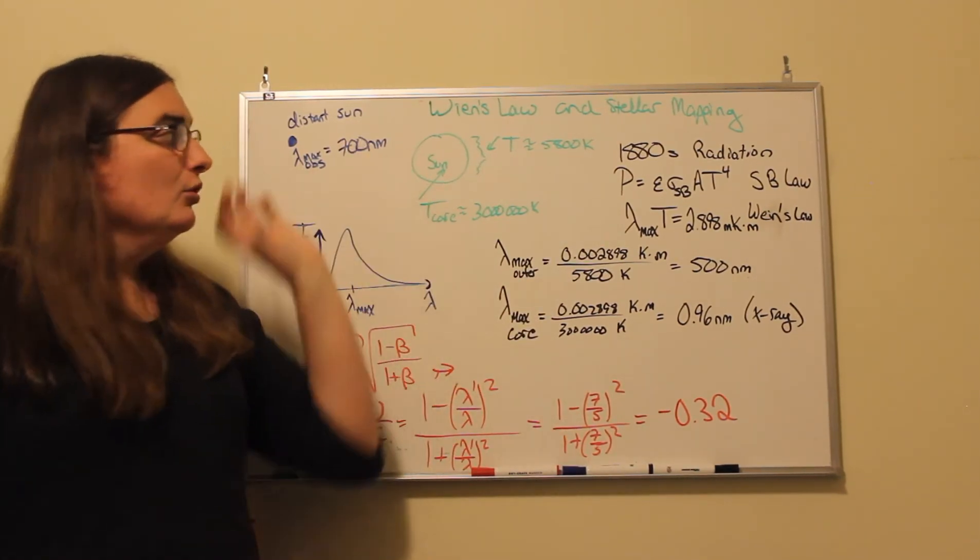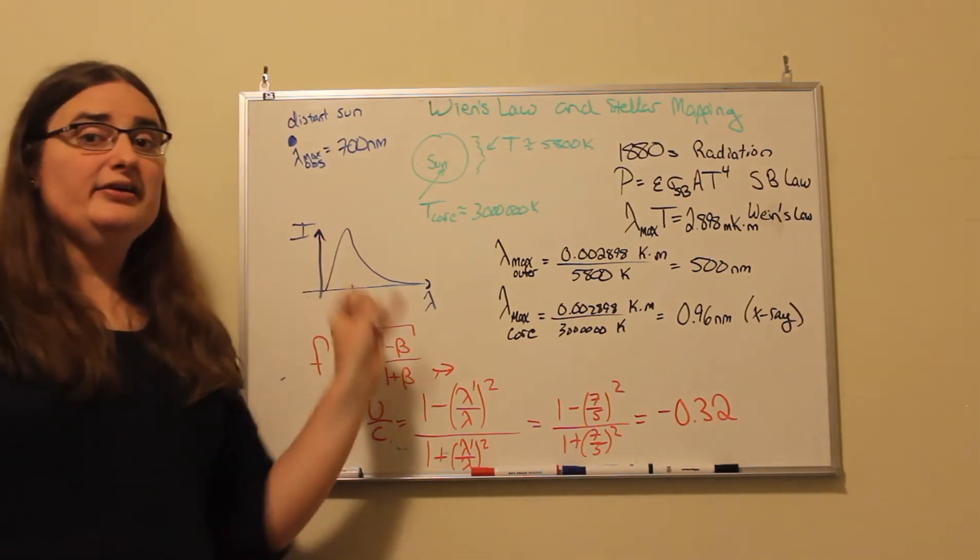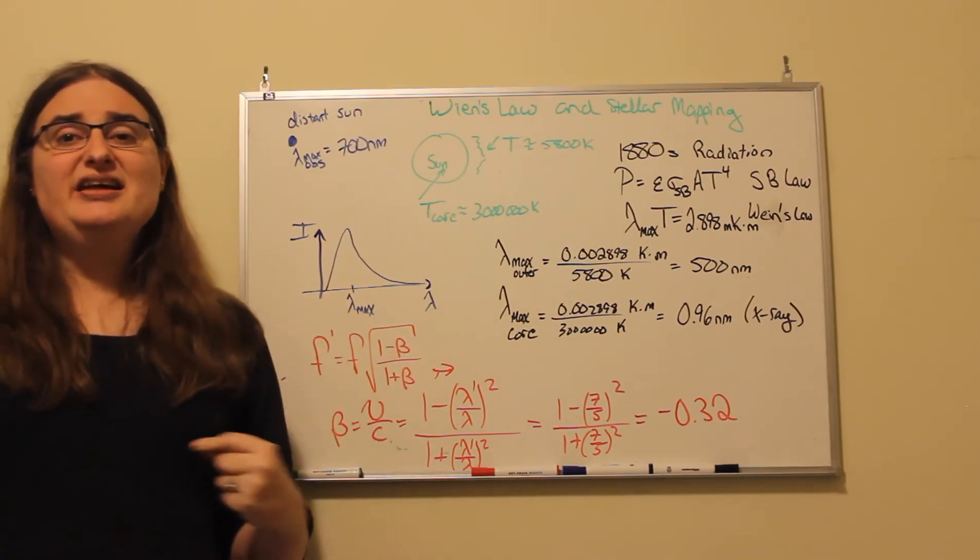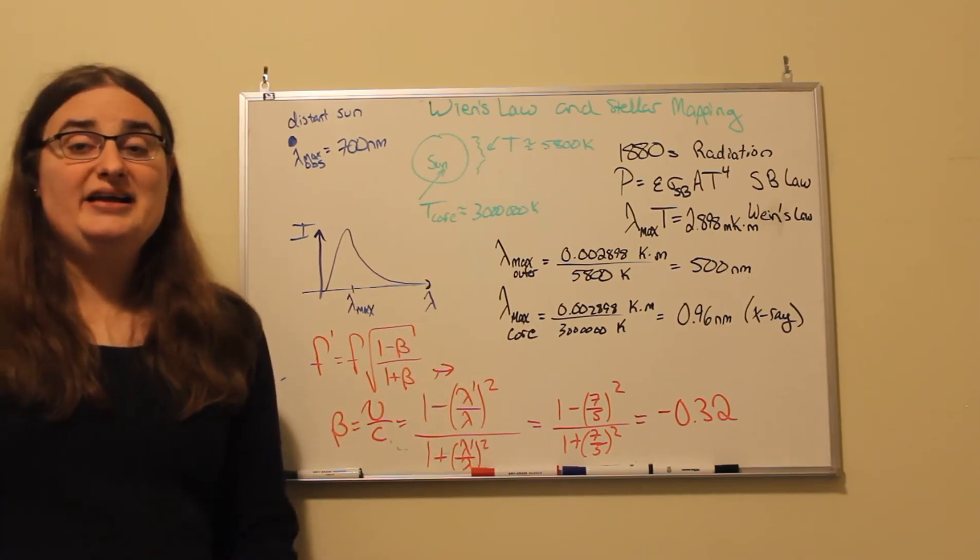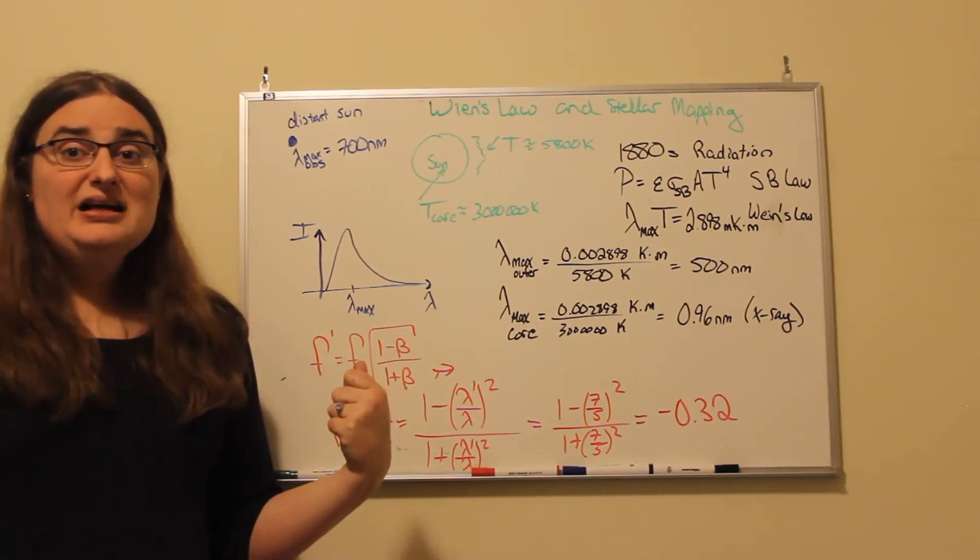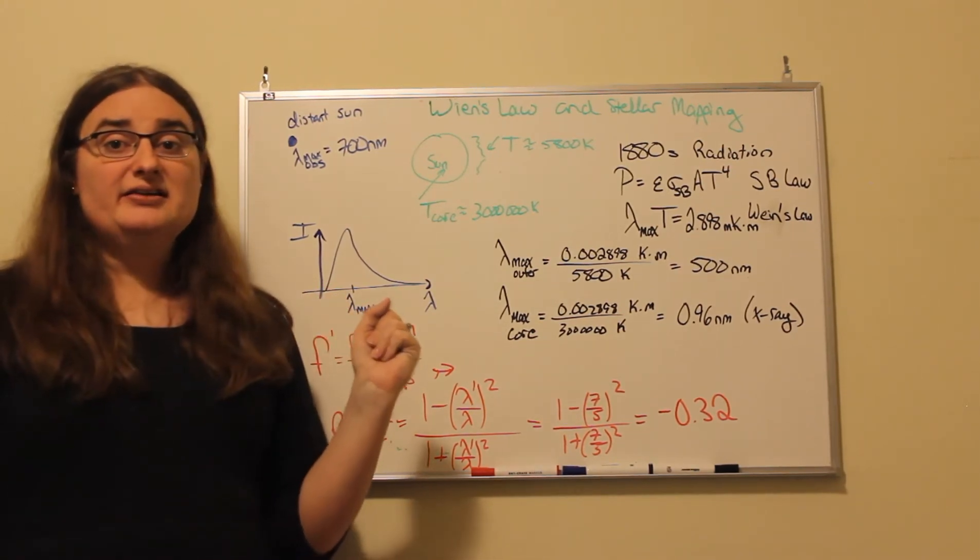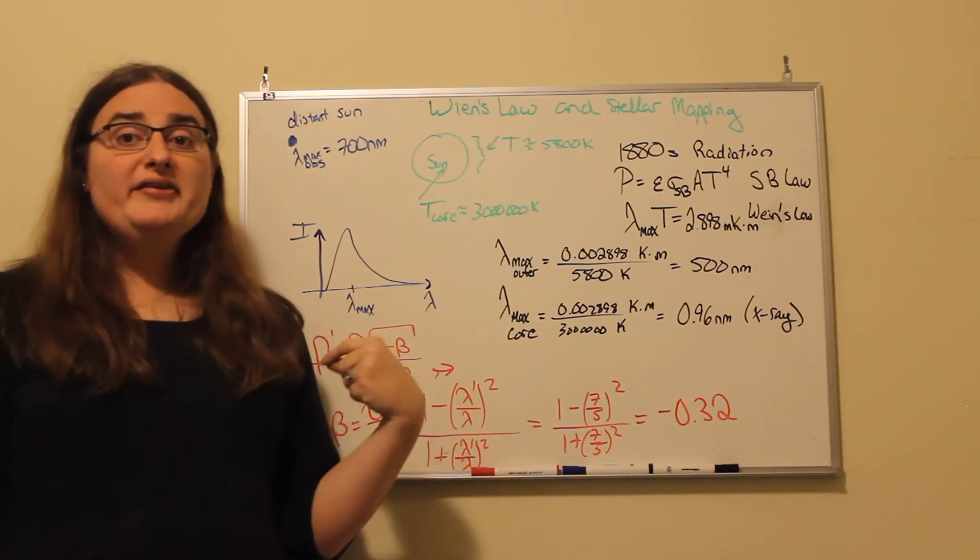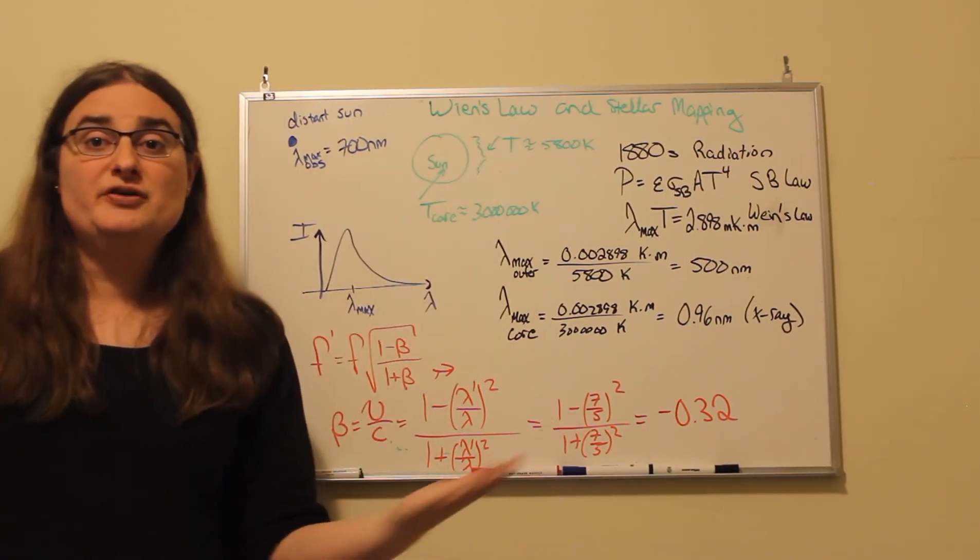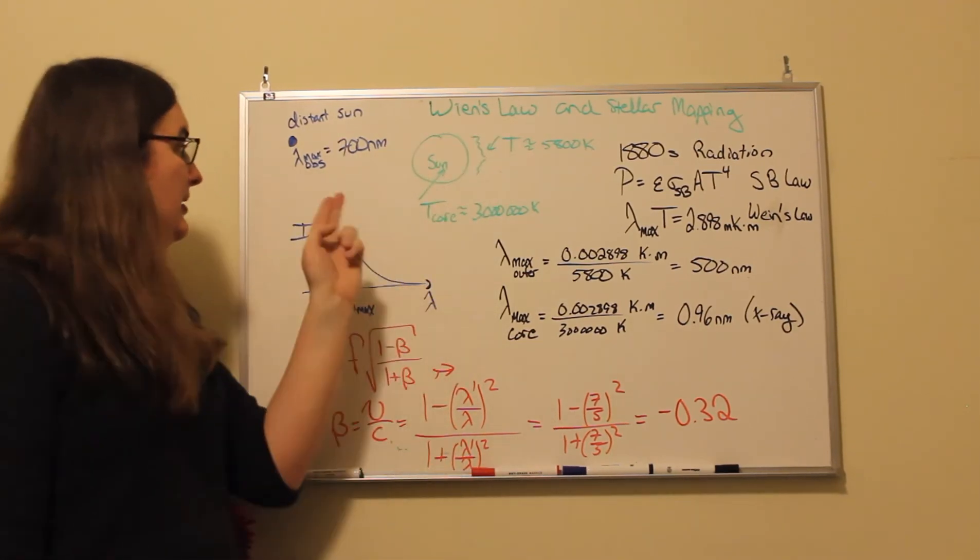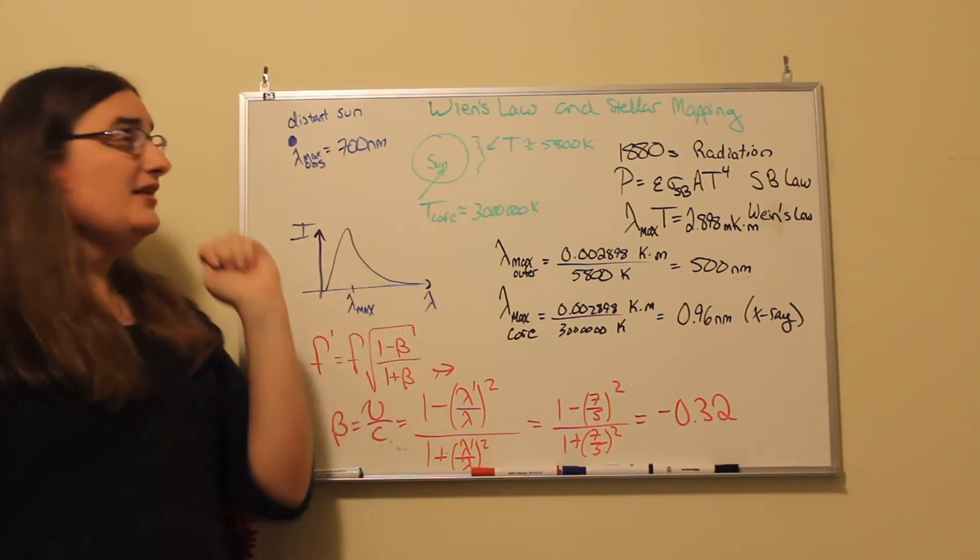And what's also pretty cool is these light curves shape changes distinctly enough where if we could accurately map the intensity of light as a function of wavelength for an object, then we should be able to predict what the maximum wavelength should be. Well, one of the things that we see when we do that is we'll see curves that would say fit a star with a temperature of 5,800 kelvin, but instead of the peak being around 500 nanometers, it might be around 700 nanometers.